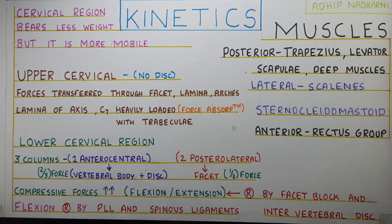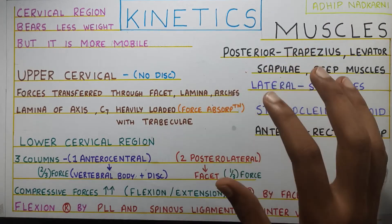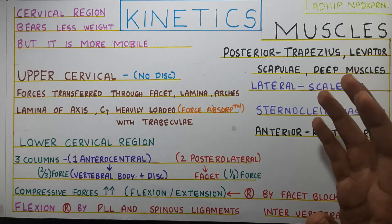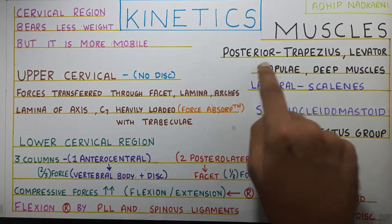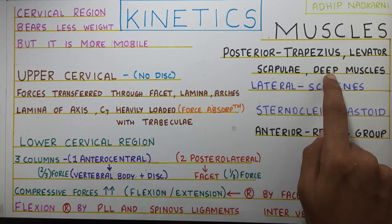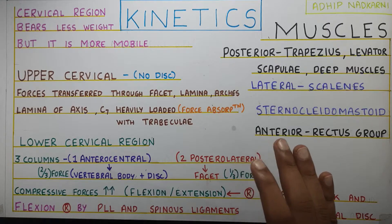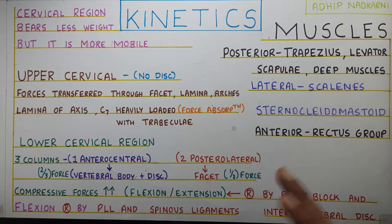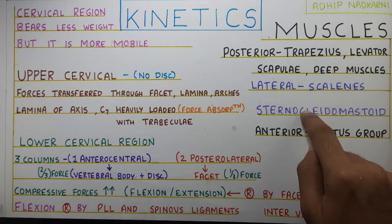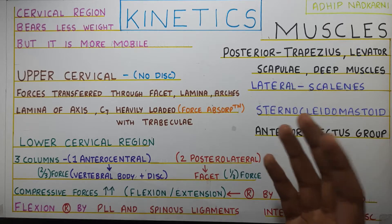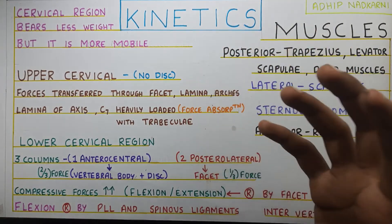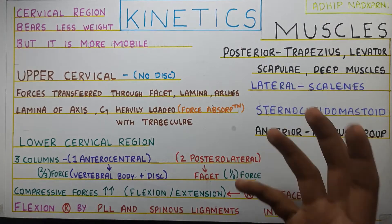Apart from these, muscles also play a big role in the forces acting in the cervical region. We will discuss all the muscles in depth in future videos. Muscles of the cervical region can be divided into three parts: posterior muscles — trapezius, levator scapulae, and some deep muscles; lateral muscles — scalenes and sternocleidomastoid; and anterior muscles — the rectus group. The sternocleidomastoid, when contracting bilaterally, creates flexion; unilaterally, it causes lateral flexion and rotation to the opposite side. The posterior muscles mostly create extension, and the anterior muscles mostly create flexion.